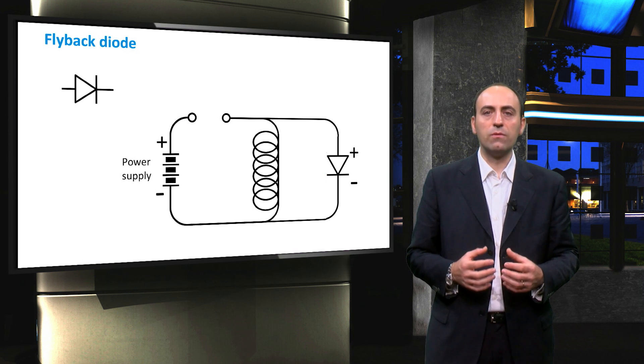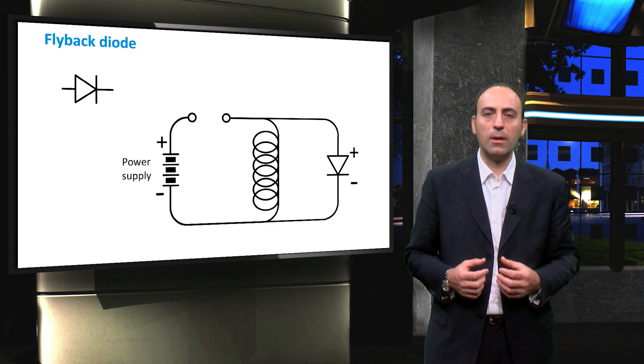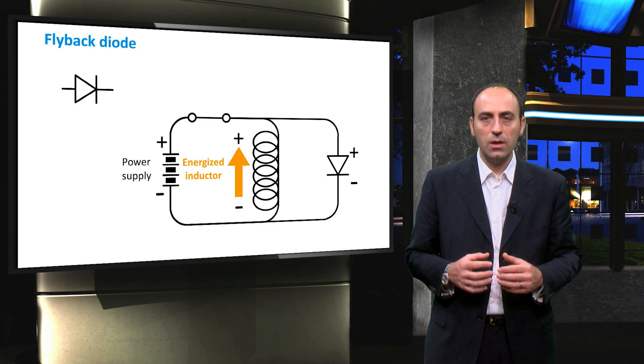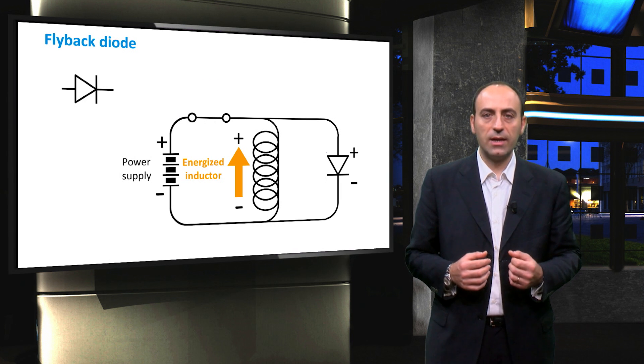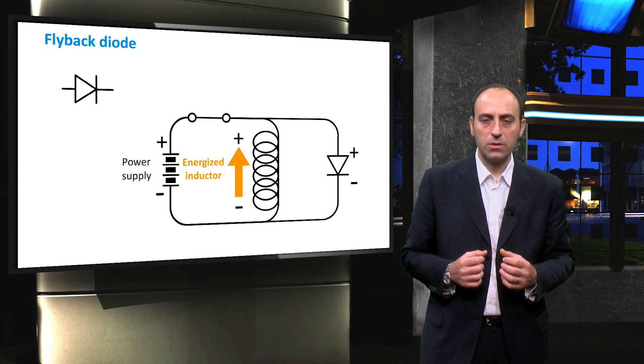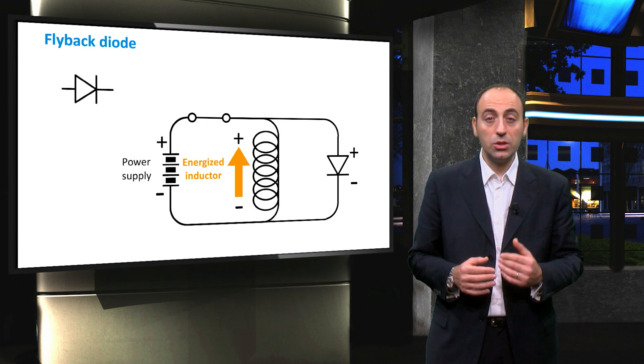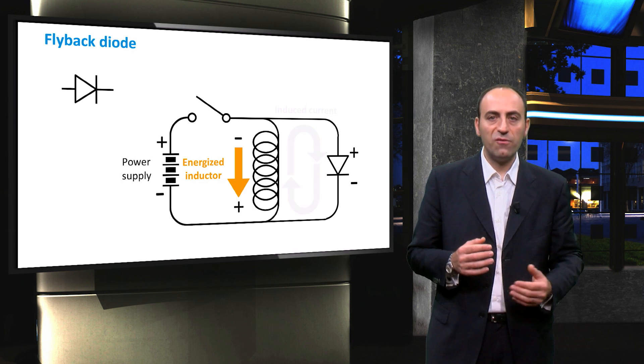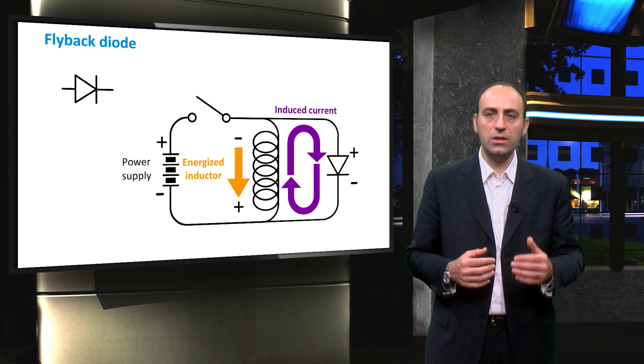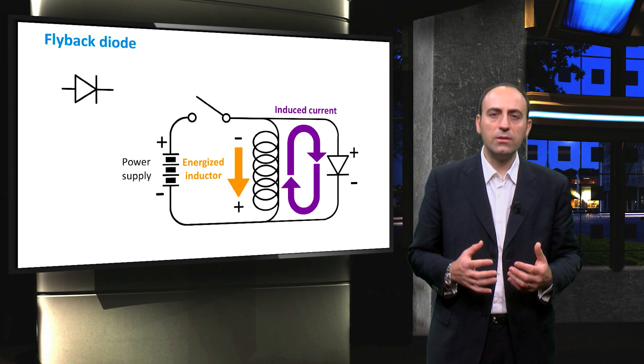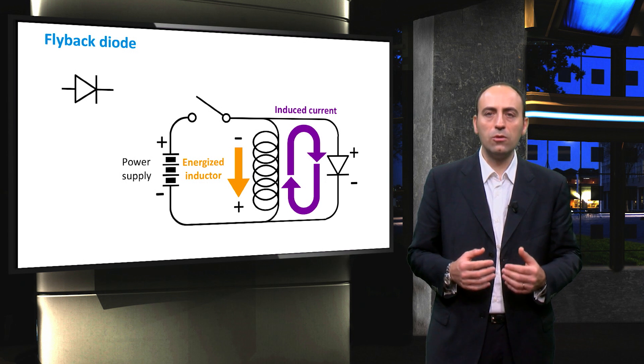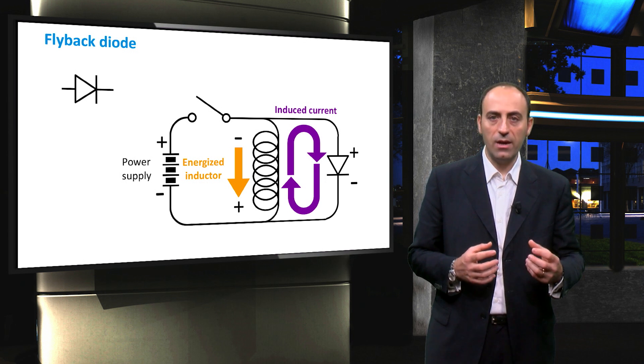A flyback diode solves this starvation arc problem by replacing it in parallel with the inductor. When the switch is closed, the diode is reverse-biased against the power supply and does not exist in the circuit for practical purposes. However, when the switch is opened, the diode becomes forward-biased relative to the inductor, allowing it to conduct current in a circular loop, so the current that was charged inside the inductor can still circulate in this topology without being eventually transferred to the air with an arc.